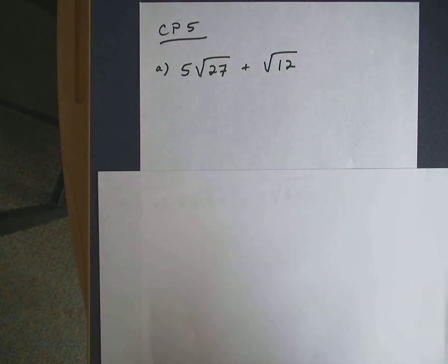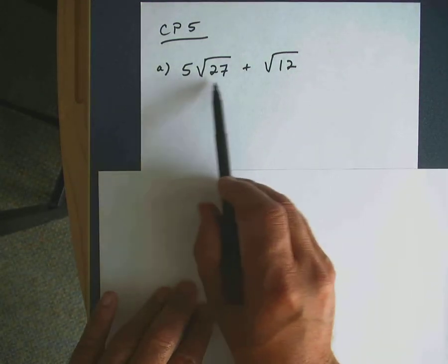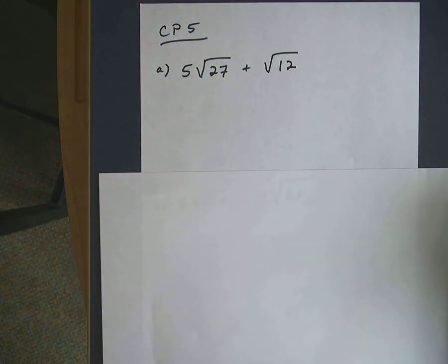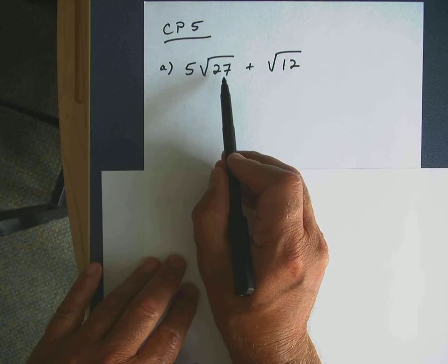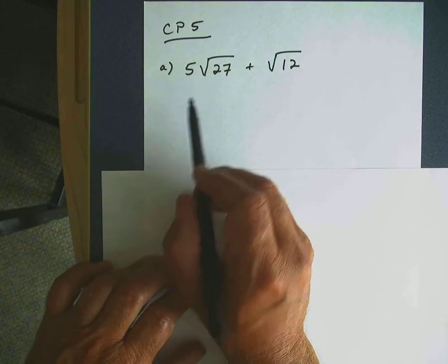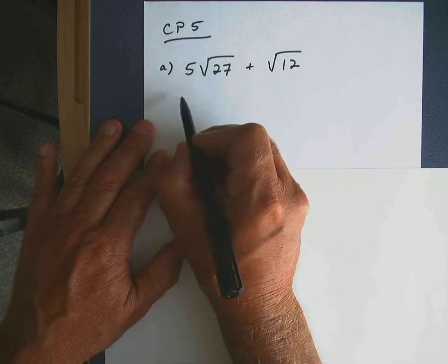And what I would do here is look at each of these terms and see if you can simplify them, and then go from there and see if you can take it further. If you look at the square root of 27, 27 does have a factor that you can take the square root of. So let's try to take care of that.